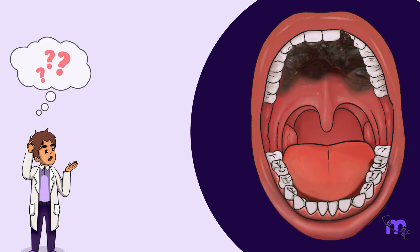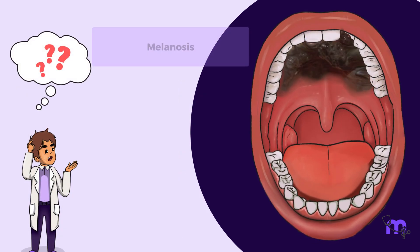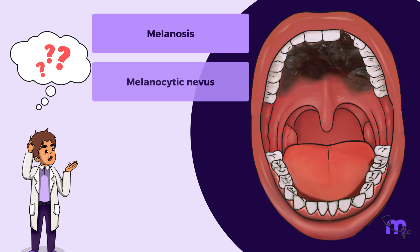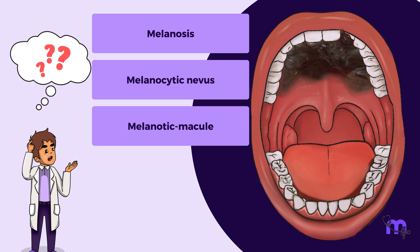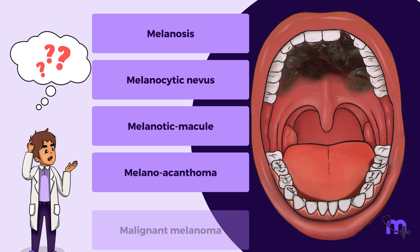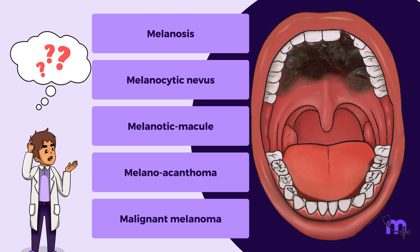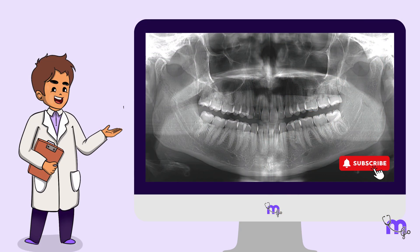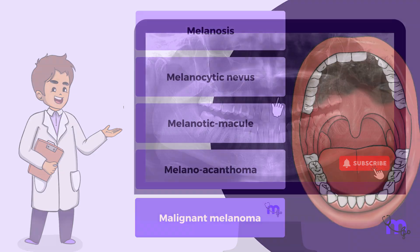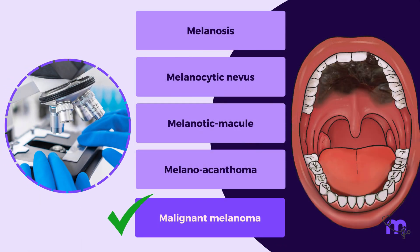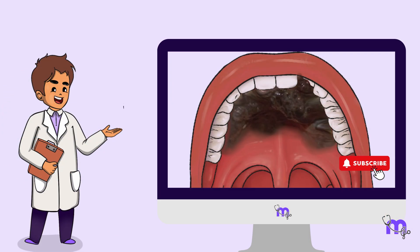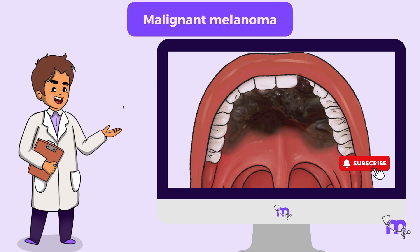Several possibilities were suspected, such as melanosis, melanocytic nevus, melanotic macule, melanoacanthoma, and malignant melanoma. A panoramic view revealed a radiolucent area with tooth displacement of 2-1 and 2-2. A biopsy confirmed the diagnosis of malignant melanoma. Let us first discuss malignant melanoma in depth.